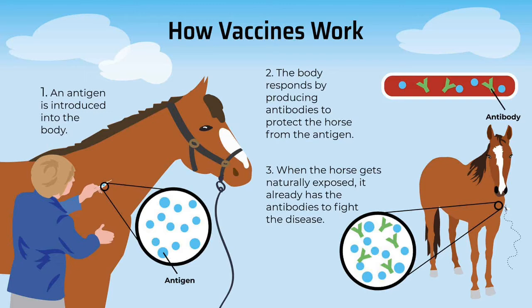A little bit about how vaccines work. First, we inject antigens that are introduced into the body. The body responds by producing antibodies to the antigen, which protects the horse. Then the horse will get naturally exposed — for example, a mosquito biting the horse and potentially giving it a virus. The antibodies are already in there, so the body knows to fight back against that disease.